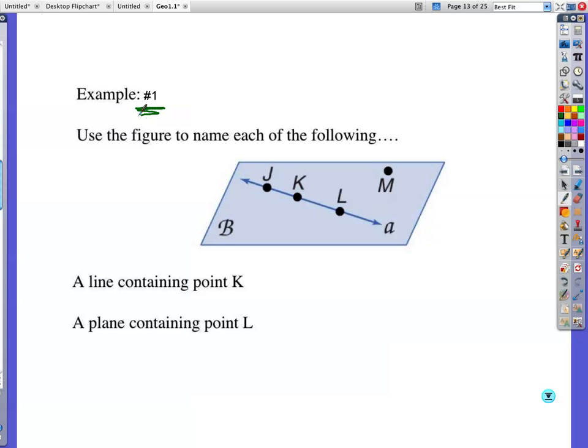A line containing point K. You have lots of options. You can write JK. You don't even have to have the K in it. You can say line JL. You can go backwards. It could be line LJ. You can even go line. You can write out the word, but then you can only have one thing behind the word, and it has to be the cursive little A there at the end.